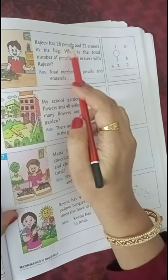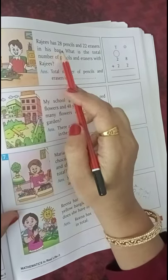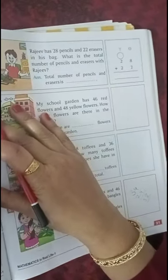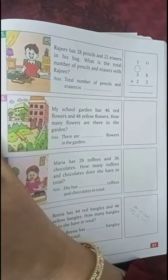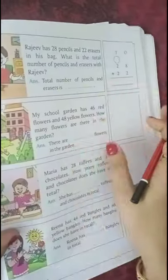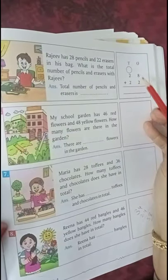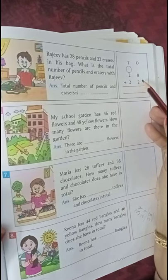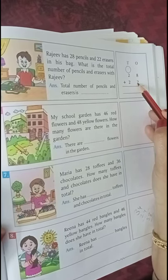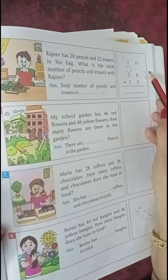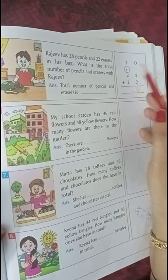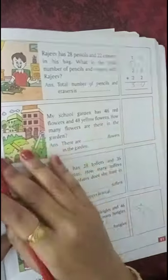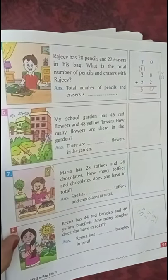Rajiv has 28 pencils and 22 erasers in his bag. What is the total number of pencils and erasers with Rajiv? Rajiv has how many pencils? 28. And 22 erasers are there. 28 pencils and 22 erasers. Again you have to do addition here. 8 plus 2 is 10. 0, 1 will be carry, 2 plus 2 is 4, plus 1 is 5. So 50 is the answer.